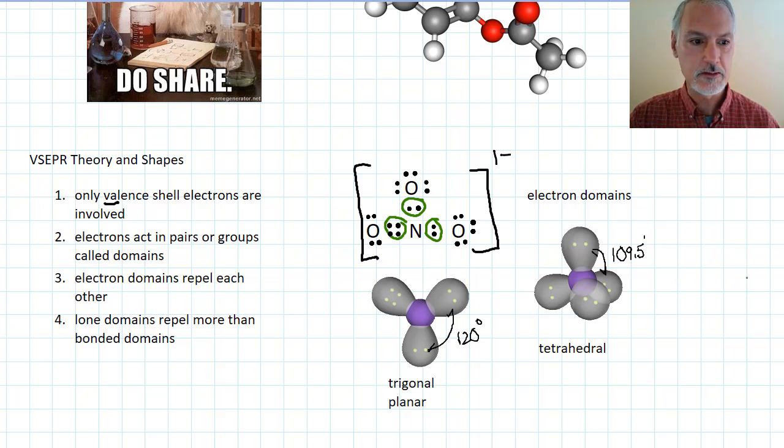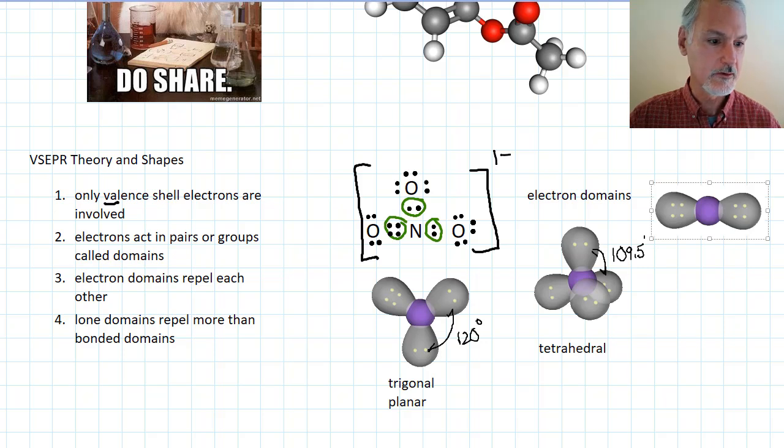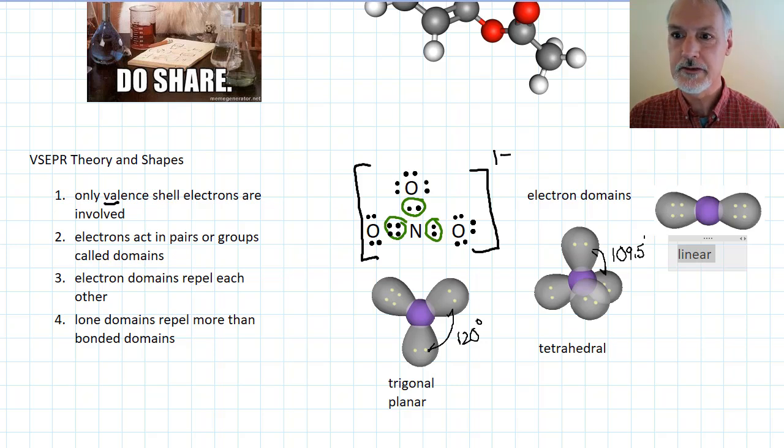Another common shape that you'll come across is where you have two regions around the central atom. This we refer to as a linear shape. In a linear shape, we have angles between our regions of 180 degrees. So that's what's meant by this statement number three, that the electrons repel each other, and they will then take on these particular orientations.